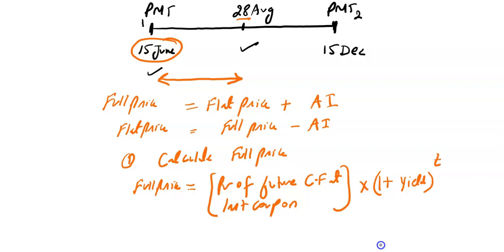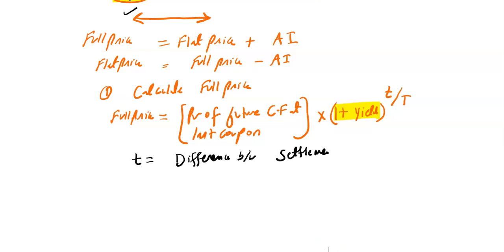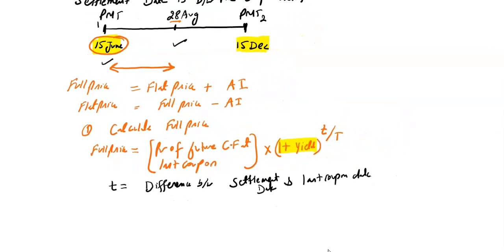The exponent is lowercase t over uppercase T. Lowercase t is the difference between the settlement date and the last coupon date — in this example, the difference between 28th August and 15th June. Uppercase T is the difference between two coupon dates — here, the difference between 15th December and 15th June.